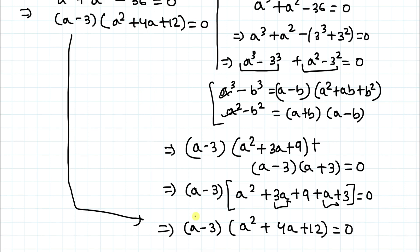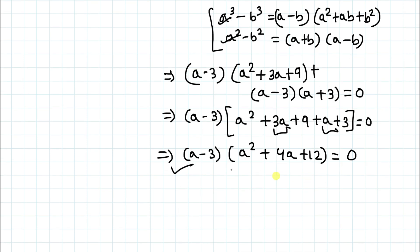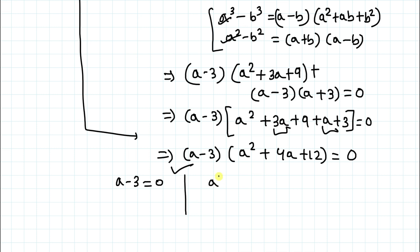Both methods give the same factors, so you can use either one. Now let's find the values of 'a'. From (a − 3)(a² + 4a + 12) = 0, we directly get a − 3 = 0 and a² + 4a + 12 = 0 as the two equations to solve.